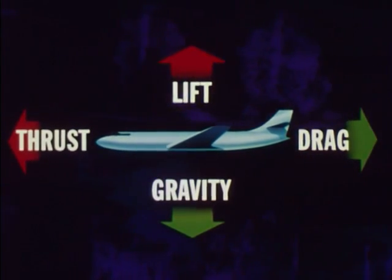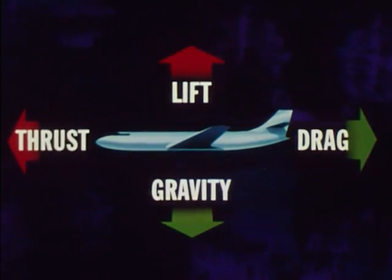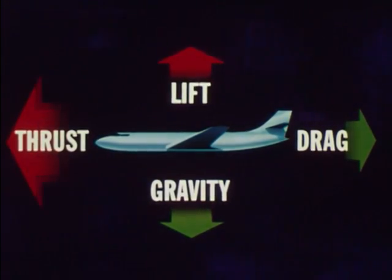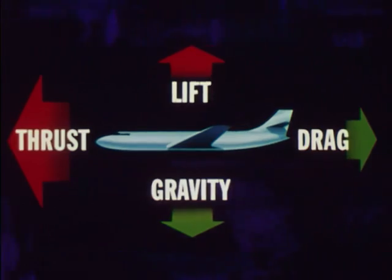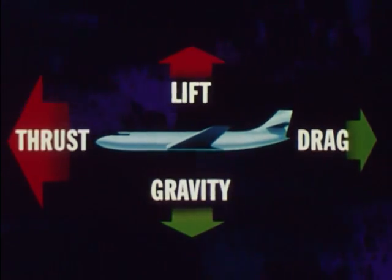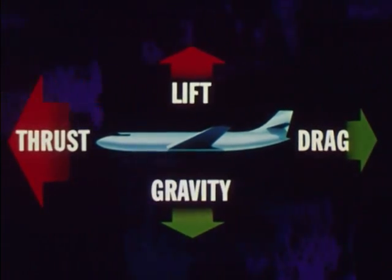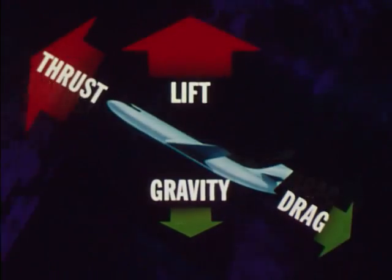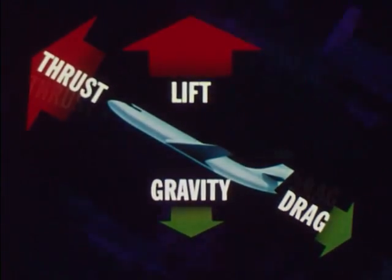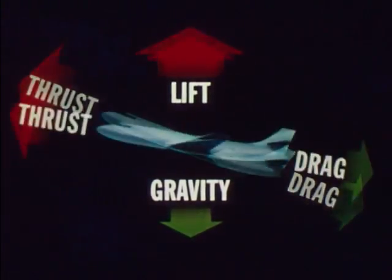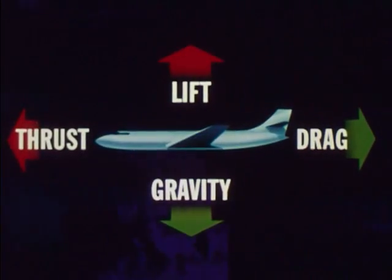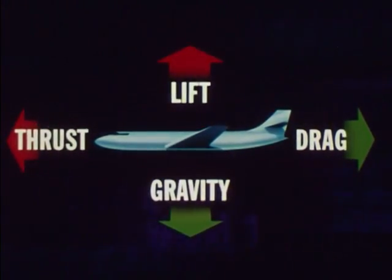For an airplane to accelerate forward, thrust must be greater than drag. For it to accelerate upwards, lift must be greater than gravity. When the airplane is in steady, level flight, thrust is exactly equal to drag, and lift is exactly equal to gravity.